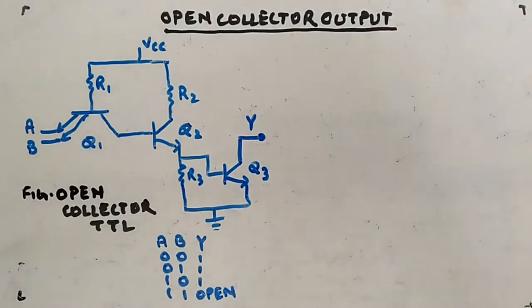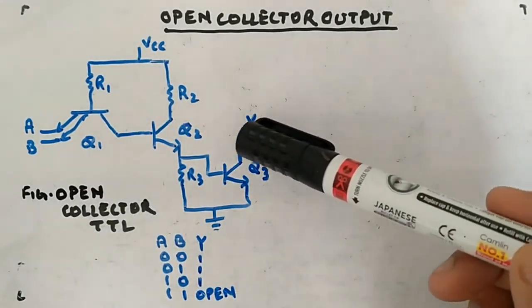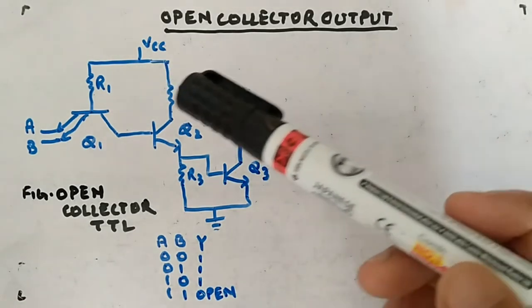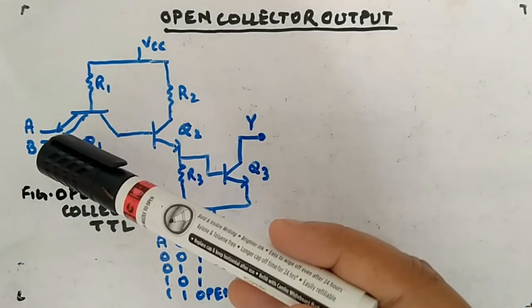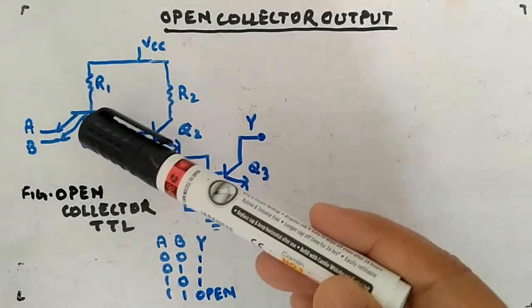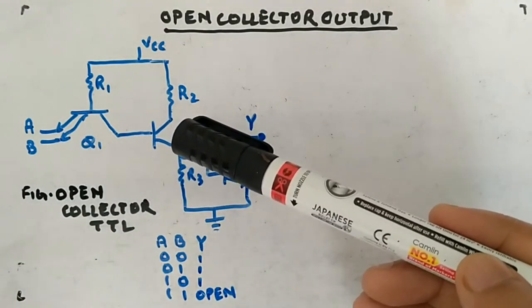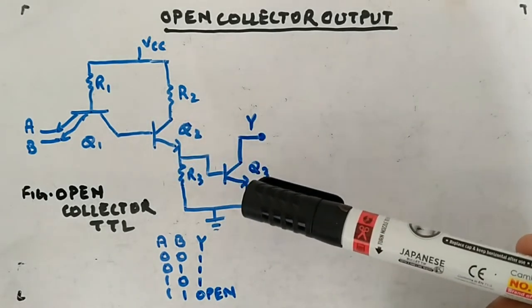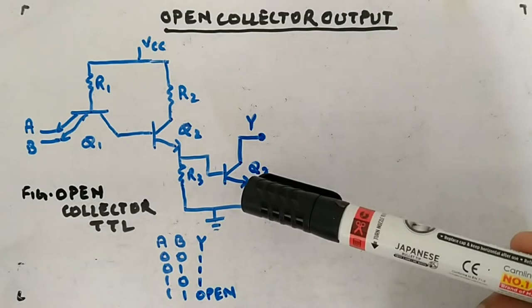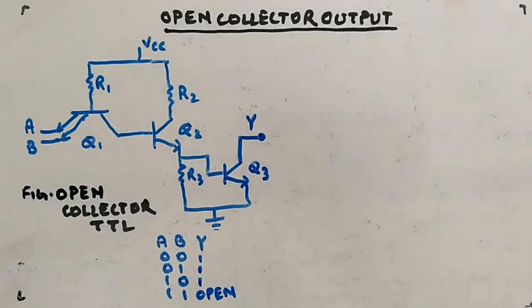Let's look at the open collector circuit. This is similar to what we've seen in detail — all the parts are the same, only the output of Q3 is open; it is not connected to VCC. So if A and B are both zero, or any of them is zero, it will provide forward bias here and reverse bias here, so this transistor will be active. Q2 will be losing charges from the base, so it will be in cutoff and will not provide current to Q3.